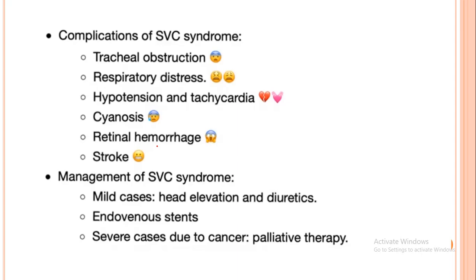Management of superior vena cava syndrome: in mild cases, elevate the head and give diuretics to decrease fluid accumulation. For surgical cases, an endovenous stent is placed to bypass the obstruction — a tube is inserted so blood flow bypasses the blocked area. In severe cases due to cancer, since it is already a sign of late stage disease, only palliative therapy can be given.